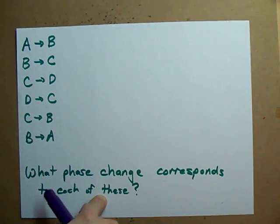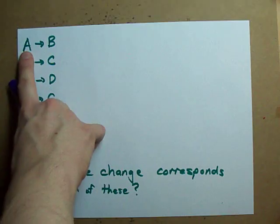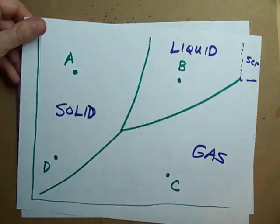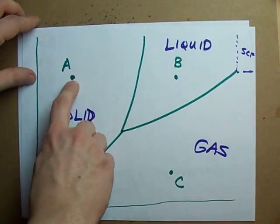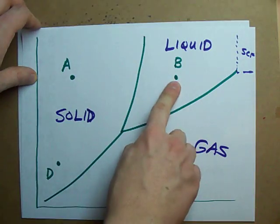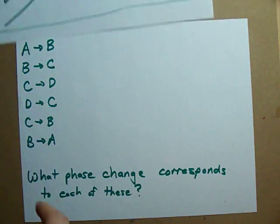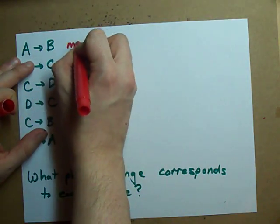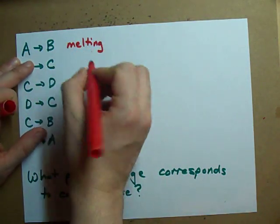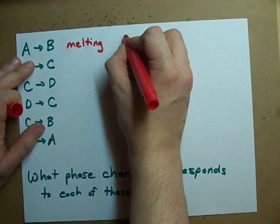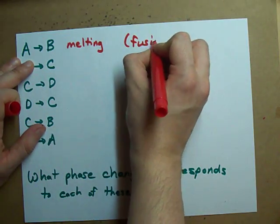What phase change corresponds when you go from point A to point B? Point A is solid. Point B is liquid. When something goes from a solid to a liquid, it's melting. Now your teacher may call that something else, like fusion.